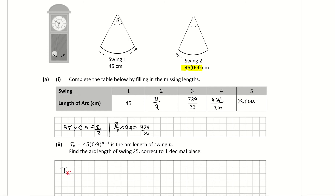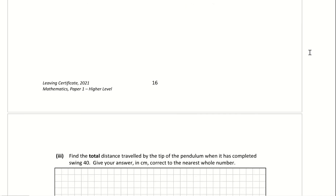For n, we're substituting in 25. So term 25 is equal to 45 times 0.9 to the power of 25 minus 1, which is to the power of 24. That gives term 25 equal to 3.58949, which to 1 decimal place is 3.6 centimeters. Don't forget your units because you might lose that mark in the marking scheme.